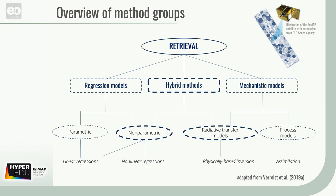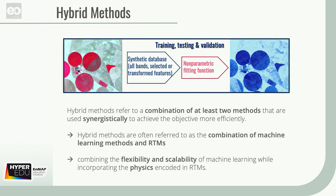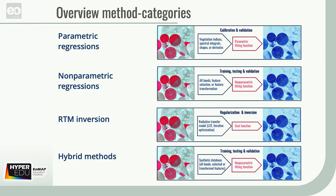Finally, hybrid methods refer to a combination of at least two methods that are used synergistically to achieve the objective more efficiently. In vegetation property mapping from earth observation data, hybrid methods are often referred to as the combination of machine learning methods and RTMs, thus combining the flexibility and scalability of machine learning while incorporating the physics encoded in RTMs. In this course, we want to focus on hybrid retrieval methods, and you will learn more details in our next video. To summarize, you should now have a basic idea of parametric regression, nonparametric regression, RTM inversion, and hybrid methods.